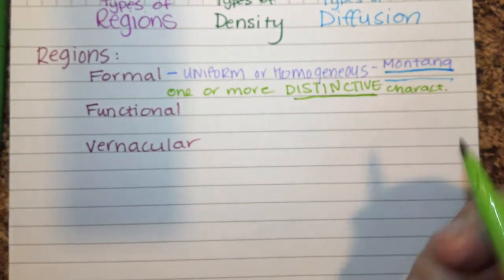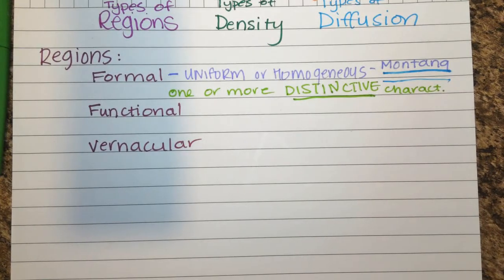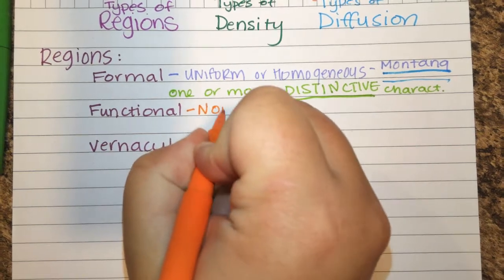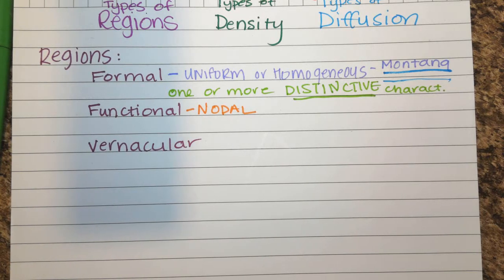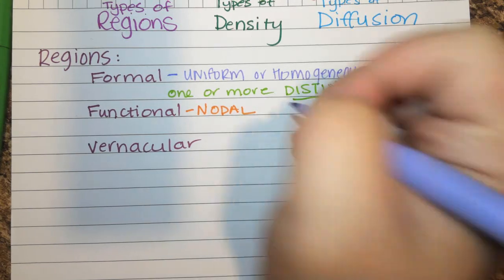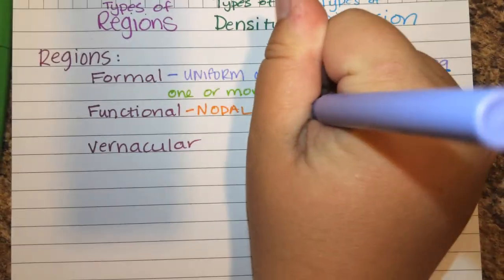A functional region is also known as a nodal region, meaning there is a focal point. It is an area organized around a node or focal point.